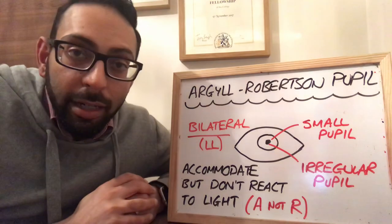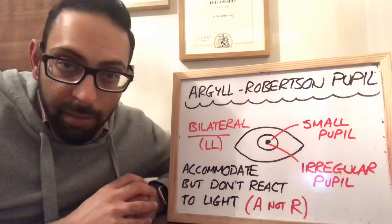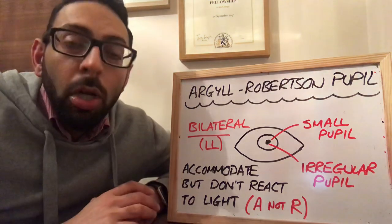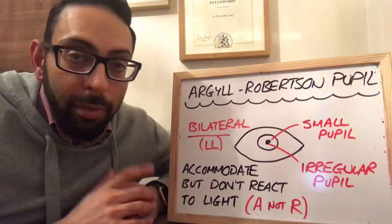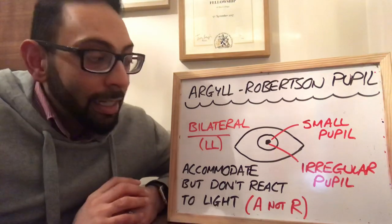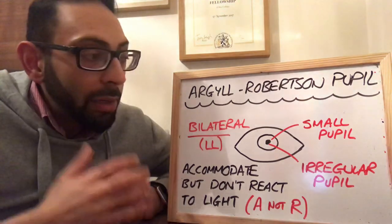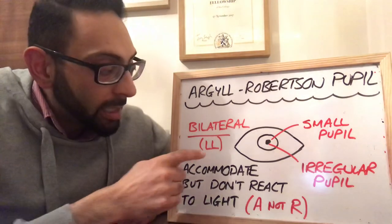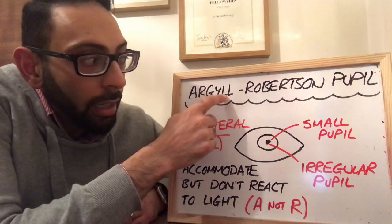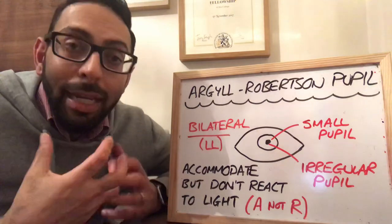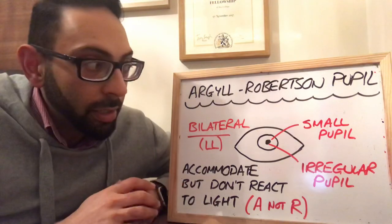Really good video on the Argyle Robertson pupil. If it comes up in a medical exam or a role play scenario, what are the key things you need to remember? The first thing is that it usually happens bilaterally, on both sides. How do I remember this? The double L — there is a double L in Argyle, which reminds me that it's a bilateral situation as opposed to a unilateral situation.